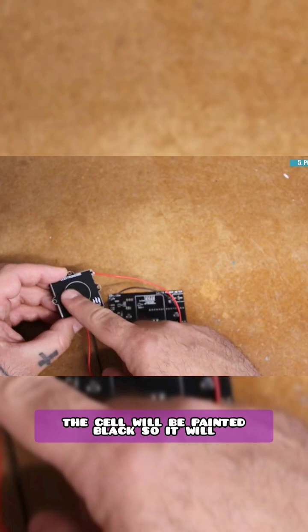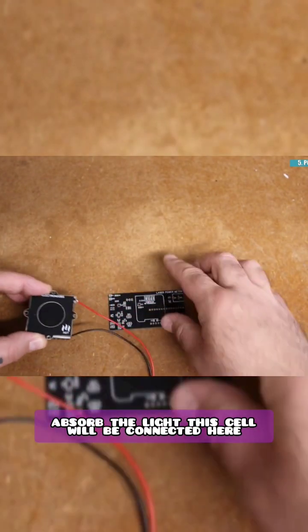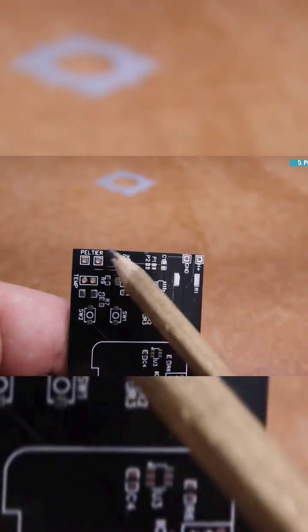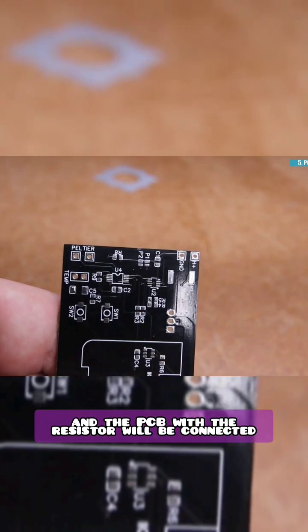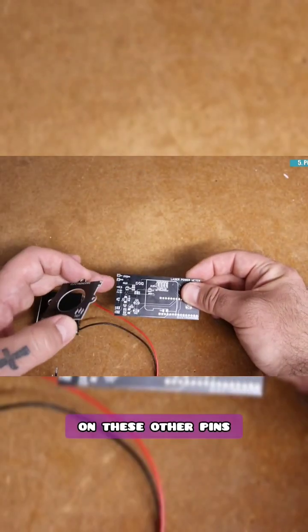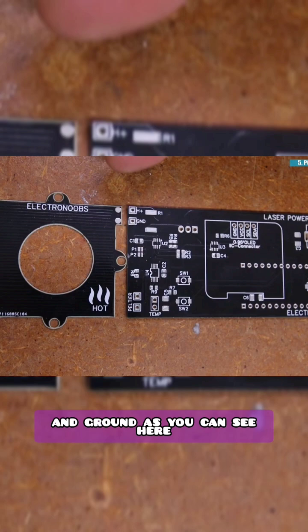The cell will be painted black so it will absorb the light. This cell will be connected here where it says Peltier and the PCB with the resistor will be connected on these other pins which are the power and ground as you can see here.